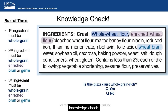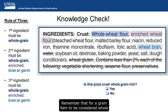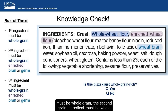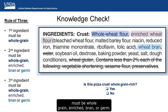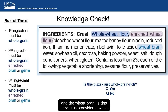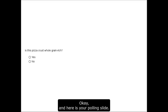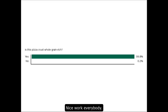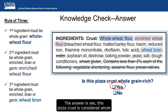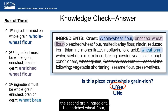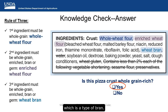Keeping this in mind, let's do one last knowledge check. Is this pizza crust whole grain rich? Remember: for a grain item to be considered whole grain rich using the rule of three, the first grain ingredient must be whole grain, the second must be whole grain, enriched, bran, or germ, and the third must be whole grain, enriched, bran, or germ. Thinking back over our three grain ingredients — whole wheat flour, enriched wheat flour, and wheat bran — the answer is yes. This pizza crust is whole grain rich because the first grain ingredient is whole grain, the second is enriched, and the third is a type of bran.